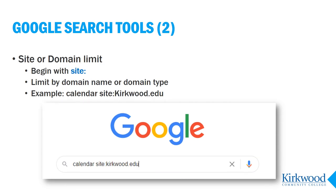The second tool is the site limit or domain limit. This lets you tell Google exactly what domain or what type of domain you want the results to be from. For example, I can have Google search only the Kirkwood domain by limiting to site:kirkwood.edu.